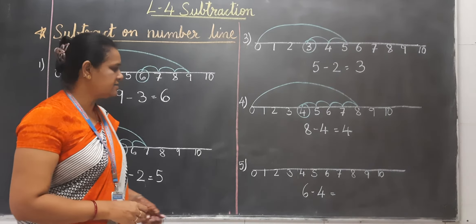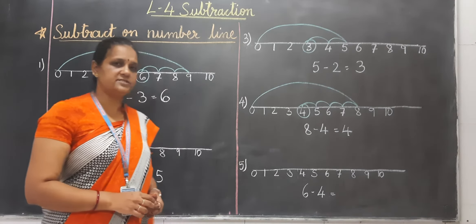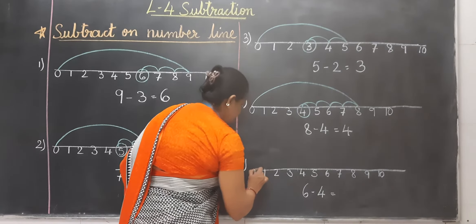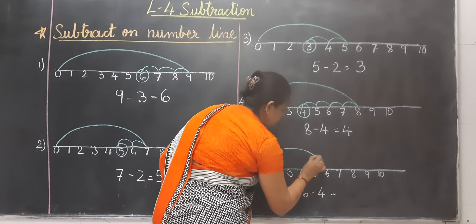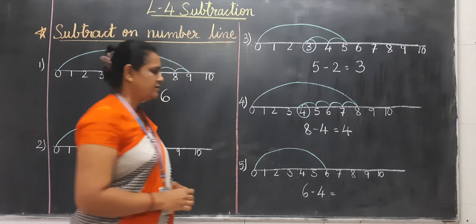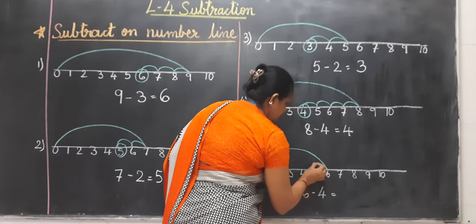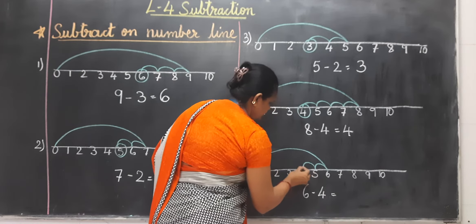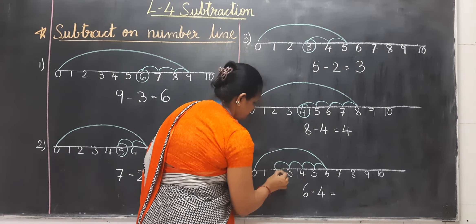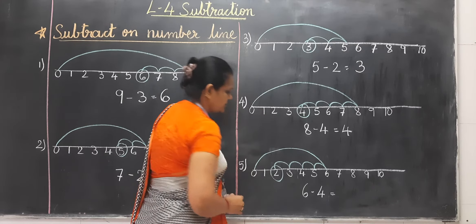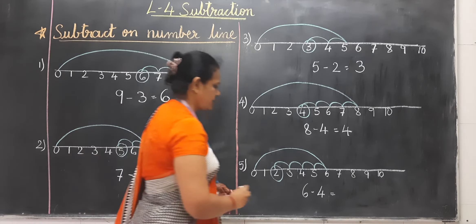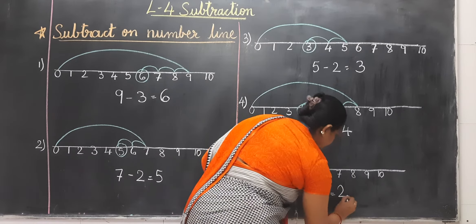Next question is 6 minus 4. We have to take a small semicircle of 4. So from 0 to 6 we have to move. From 6 we have to cut 4, so 1, 2, 3, 4. Our answer is 2.